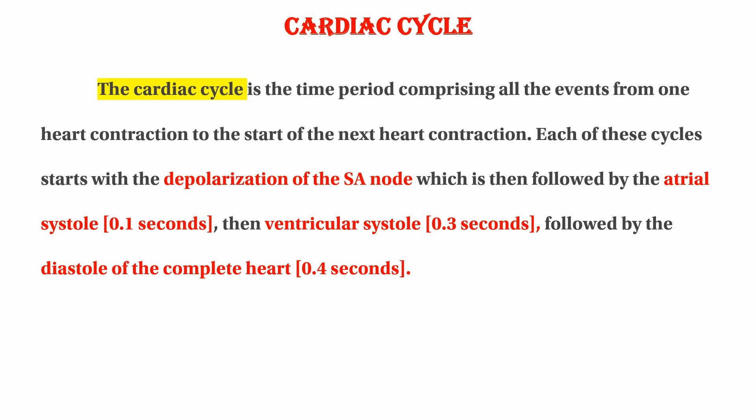This is followed by the diastole of the complete heart. The total cardiac cycle is 0.8 seconds, occurring once per second.